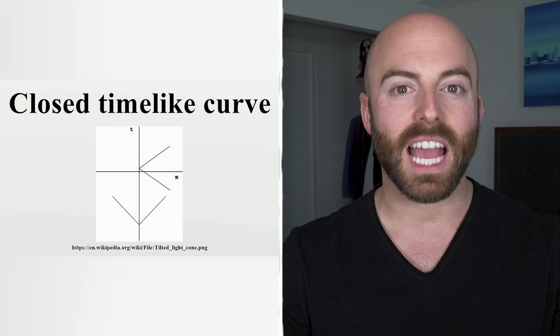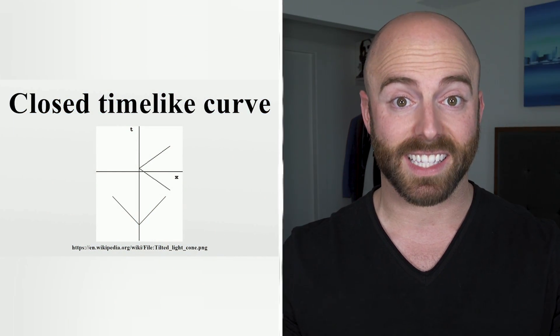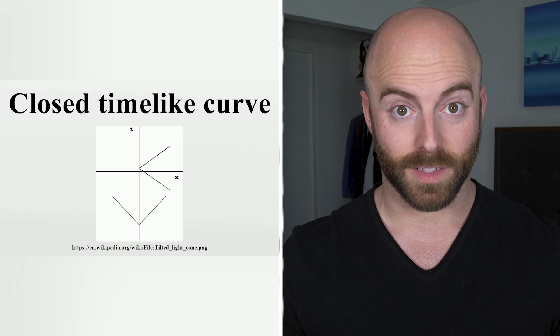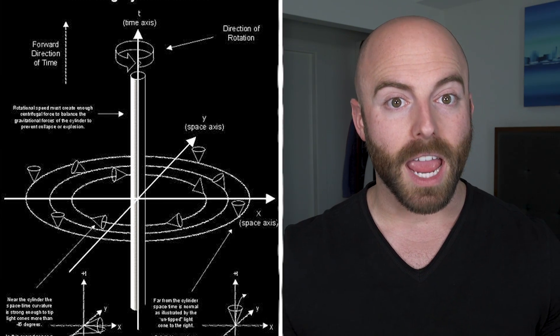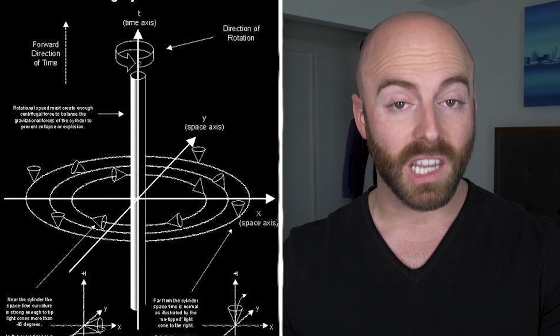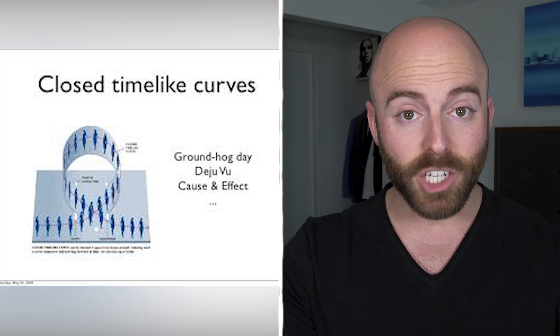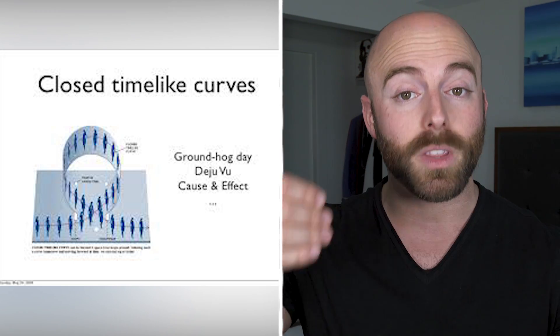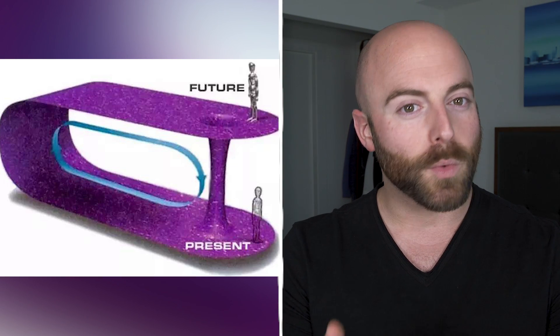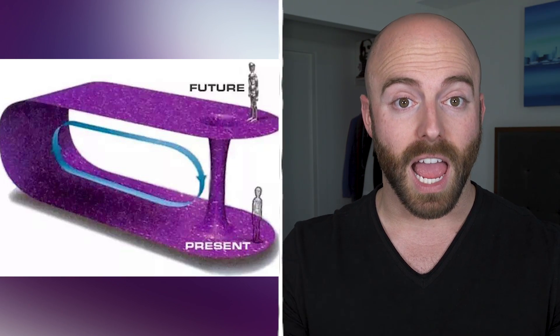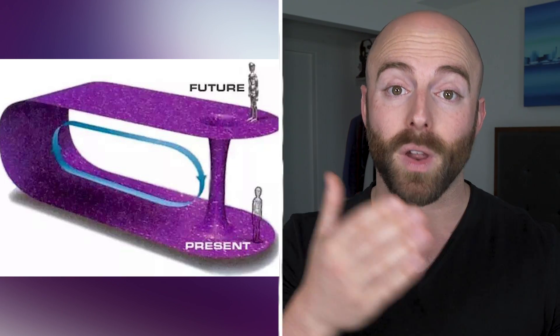Some scientists speculate that closed time-like curves exist inside some black holes. Every object in space and time has what's known as a world line. It can be thought of as a trajectory through time, taking us from our past through the present to the future. Now usually, we're rigidly stuck in our world line and have to pass through it from point A to Z.